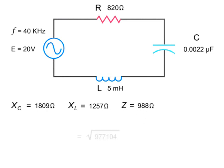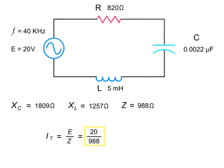To derive the total current of the circuit, divide the source voltage by the impedance. Thus, 20 volts divided by 988 ohms equals .0202 amps, or 20.2 milliamps.